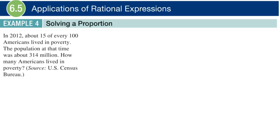Okay, so moving now into example number four. We have a little bit of data here from the Census Bureau. In 2012, about 15 out of every 100 Americans lived in poverty. The population at that time, about 2012, was 314 million. About how many Americans lived in poverty?